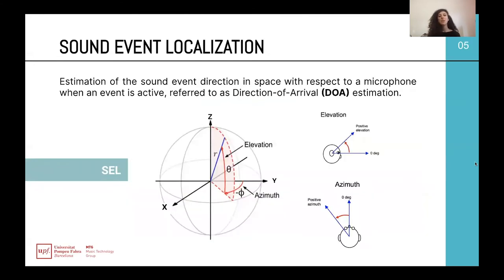Sound Event Localization can be considered as the estimation of the Sound Event Direction in space with respect to a microphone when an event is active, which can be referred to as Direction of Arrival Estimation. So the Sound Event Localization task should be able to detect the elevation and the azimuth angle where the source is coming from.